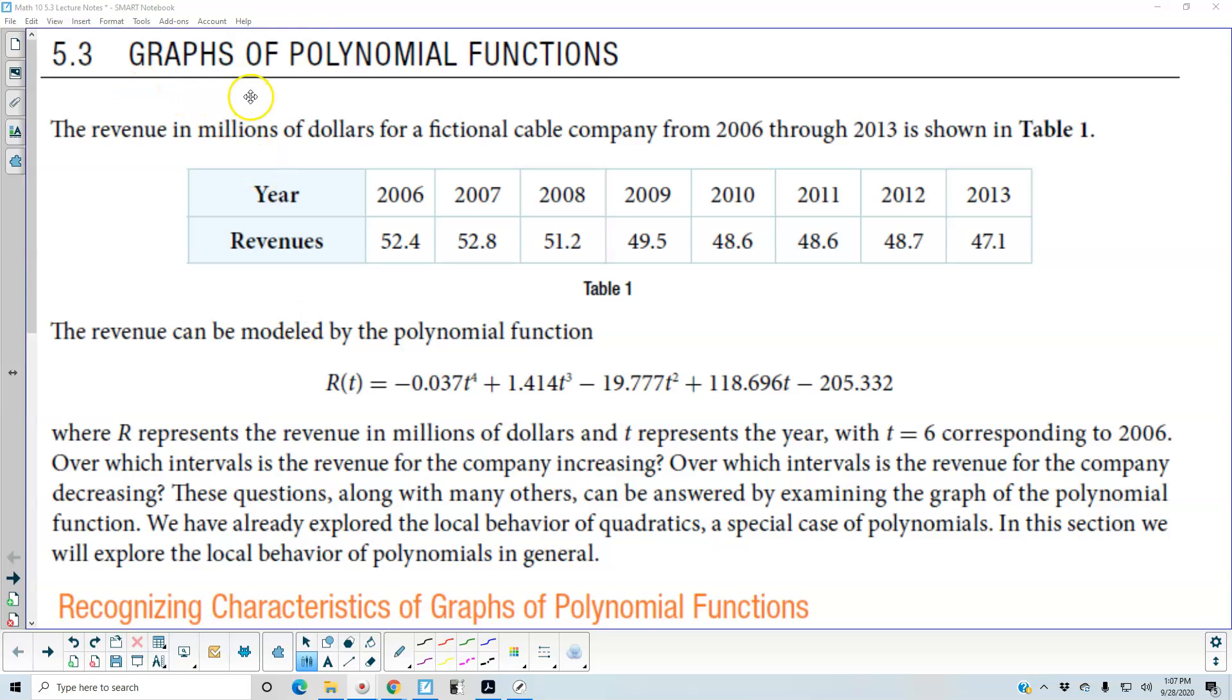Section 5.3, graphs of polynomial functions. The revenue in millions of dollars for a fictional cable company from 2006 through 2013 is shown in Table 1. Here's your years going from 2006 to 2013, so we can see that number is increasing. And then the revenues go from $52.4 million all the way to $47.1, so it's decreasing as far as revenues are concerned.